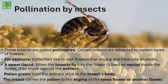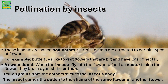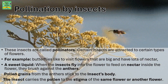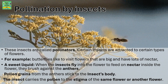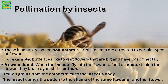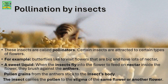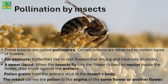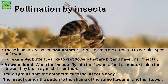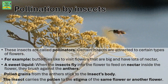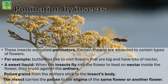For example, butterflies. Butterflies like to visit flowers that are big and have lots of nectar — a sweet liquid. When the insects fly into the flower to feed on nectar, inside the flower they brush against the anthers. Pollen grains from the anthers stick to the insect's body. Then the insect carries the pollen to the stigma of the same flower or another flower.